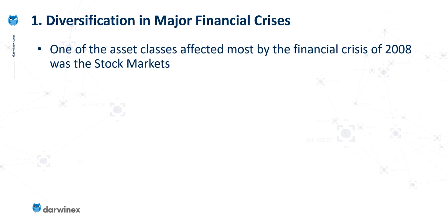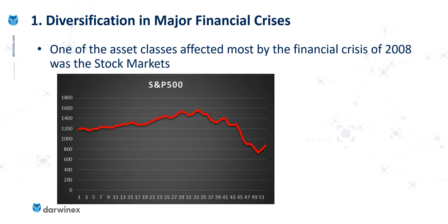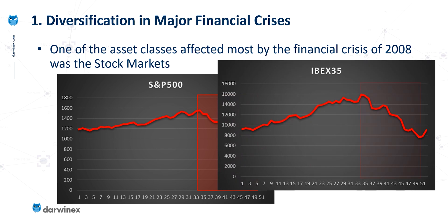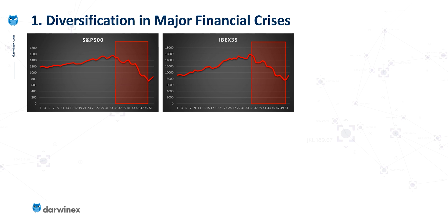One of the asset classes affected in a major way by the financial crisis in 2008 was the stock markets. This is what happened to the S&P 500 — the red area on the chart is 2008. Because stock markets tend to be very correlated — when one market goes up, another tends to go up, and vice versa — other markets around the world were impacted in a similar way. This is the example for the Spanish Ibex 35. But when there is a major financial crisis of this nature, it tends to be other markets that are also impacted.